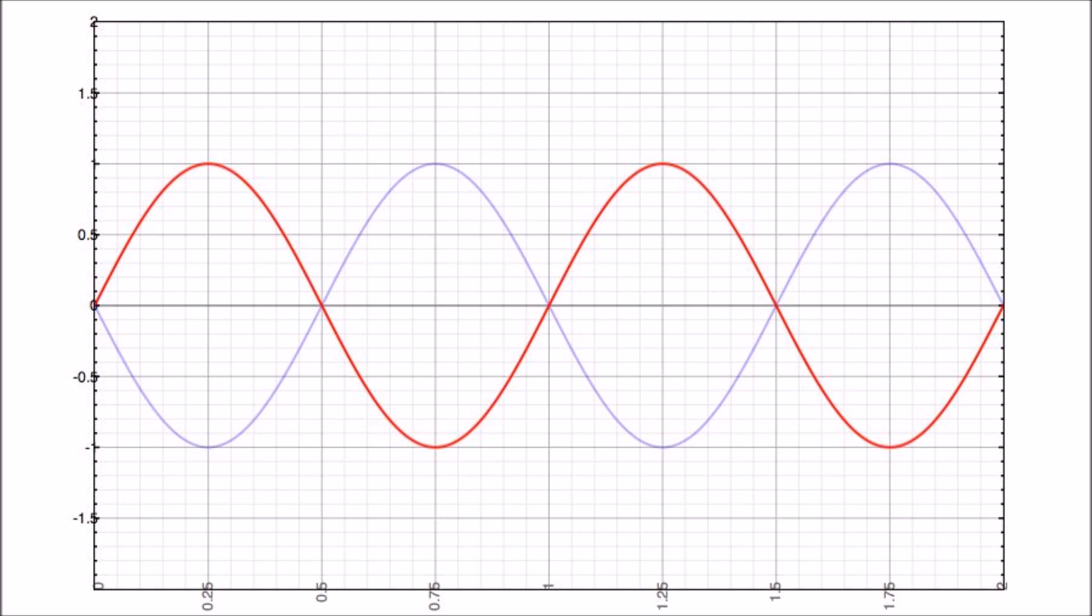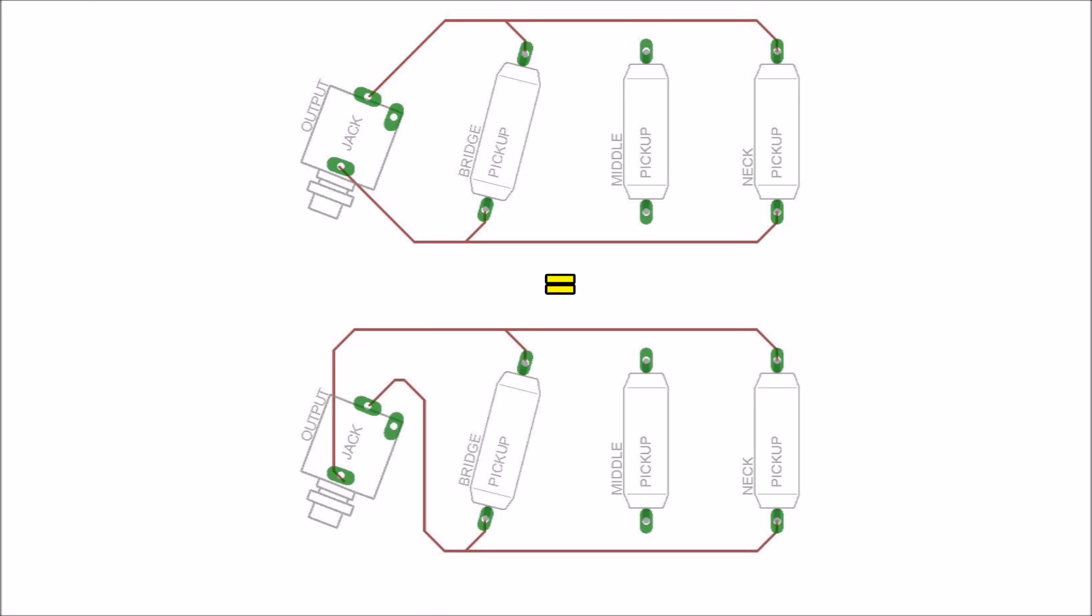They may be said to be mirror images of each other. When we redraw the circuit diagrams, it becomes obvious why both connections will produce the same tones. The pickups are actually connected in exactly the same manner, but only the output signal and the ground are interchanged.